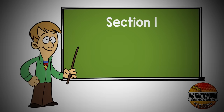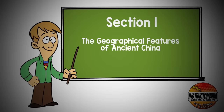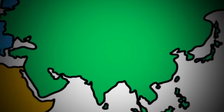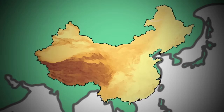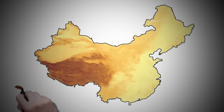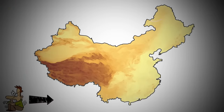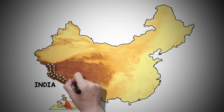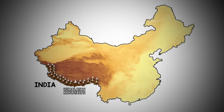Section 1: Geographical Features of Ancient China. China is the third-largest country in the world, and it has every type of climate on Earth, from subarctic to tropical. China borders 14 other countries, including India to the southwest, beyond the Himalayan mountains.